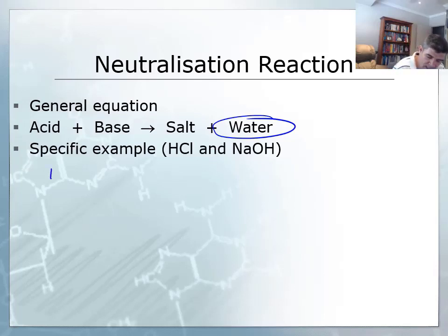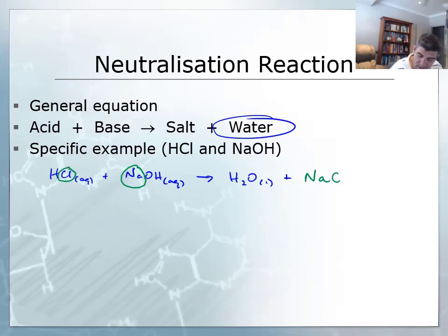So in this case, we have HCl, which is going to be in solution, and it's going to combine with NaOH, which is also going to be in the solution, and we're going to form water, which is a liquid, and we're going to form a salt. The salt that we're going to form is going to be a combination of the cation associated with the base and the anion associated with the acid. So NaCl.